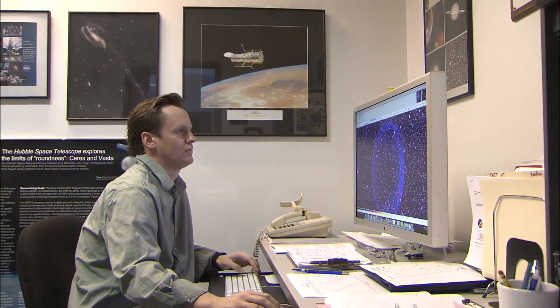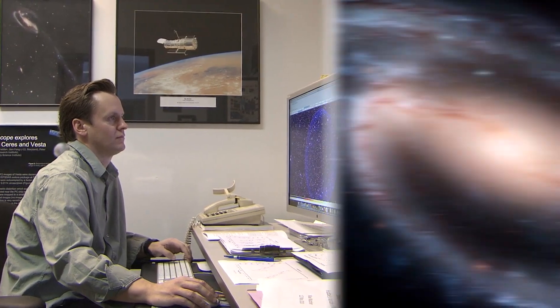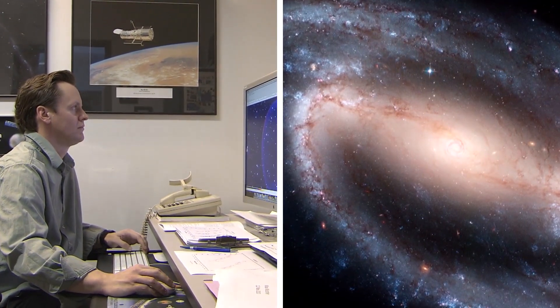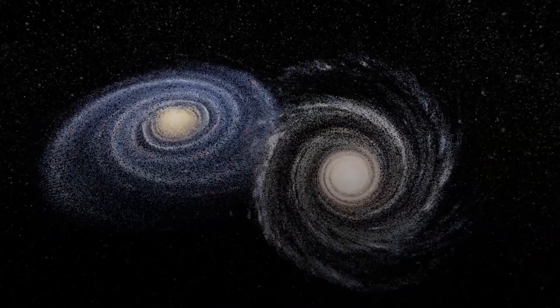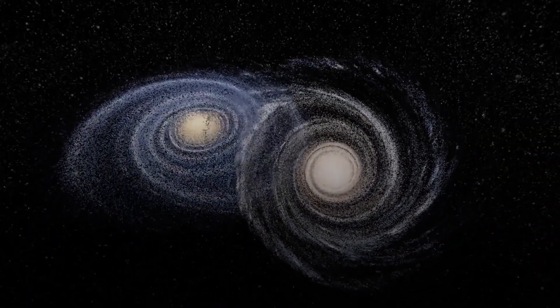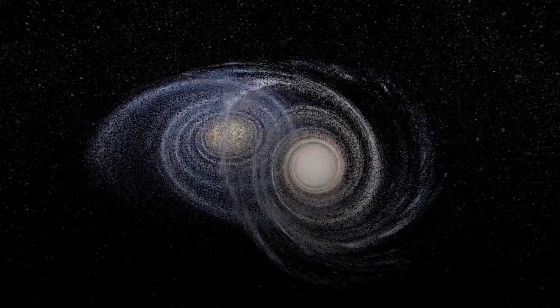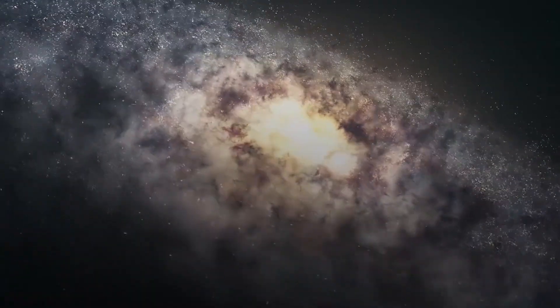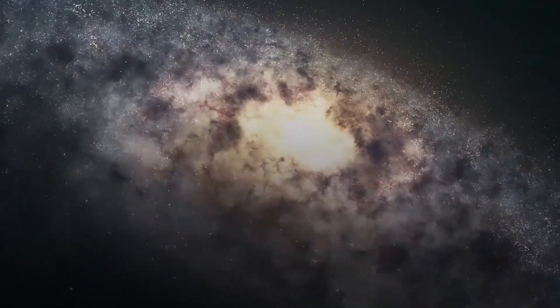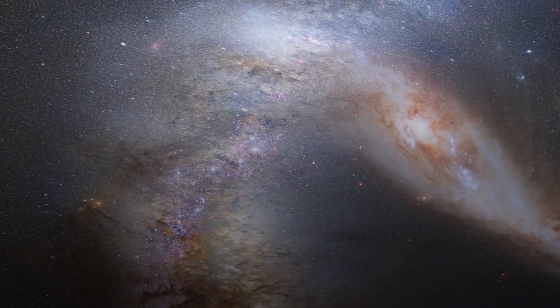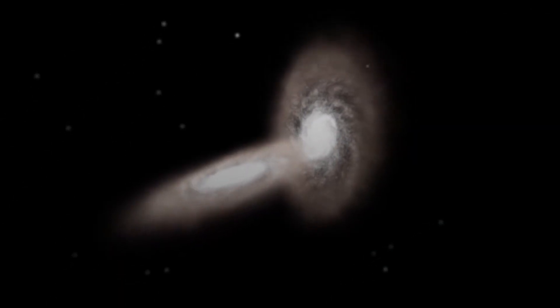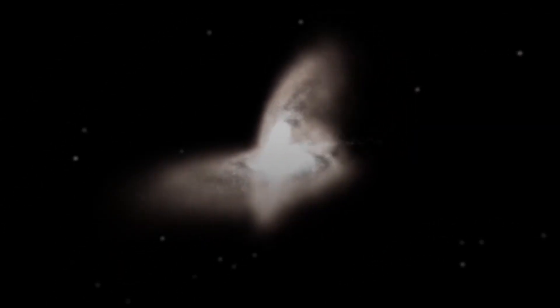New insights have prompted scientists to revise their estimation of Andromeda's mass while increasing the mass attributed to the Milky Way. Consequently, the current understanding suggests that the masses of these two cosmic giants are much closer than previously assumed. Thus, if one were situated in Andromeda and observed Earth, the sight would reveal a comparably massive galaxy. This realization serves to underscore the colossal nature of the Milky Way itself.